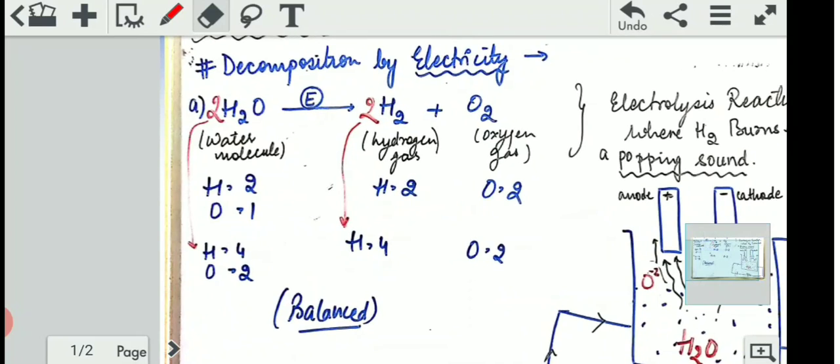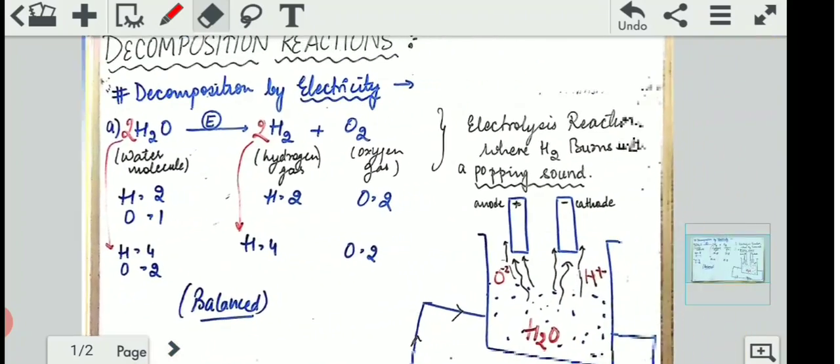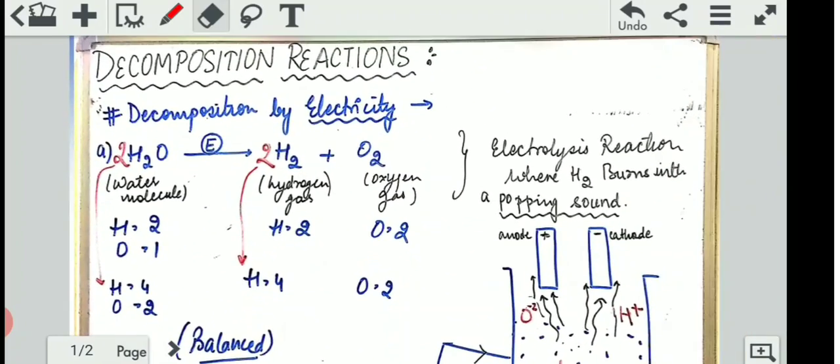And this is what I have shown you the balancing. Now, for by now, this will be seeming very easy to you. Hydrogen here, 2. Oxygen here, 1. Hydrogen, 2. Oxygen, 2. So, oxygen 1, oxygen 2. First, we have to add 2 here. As I add 2, hydrogen becomes 4. 2 times 2 is 4. And oxygen is 2. Now, hydrogen is 4 here and 2 there. So, I have to add 2 here. Hydrogen is 4. So, this is how decomposition by electricity takes place.